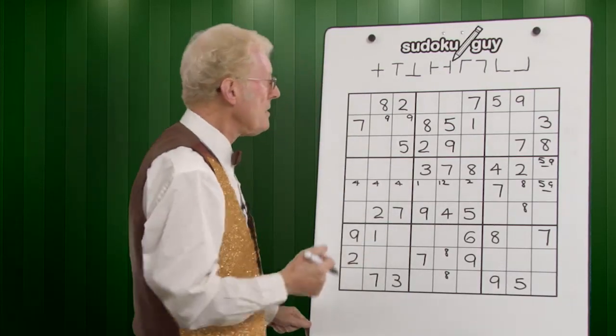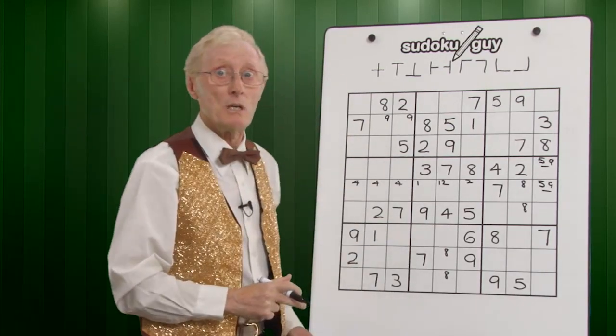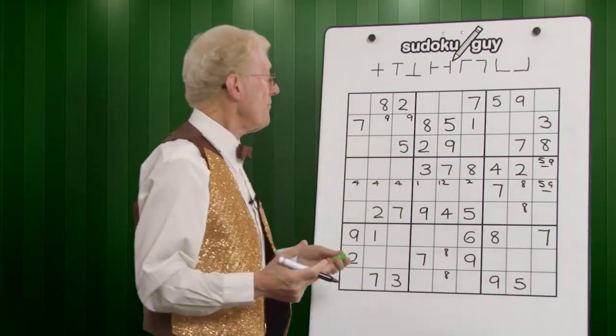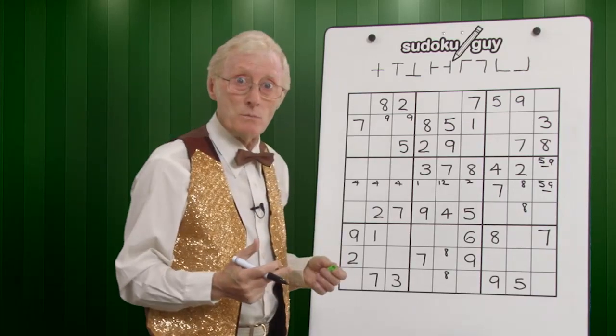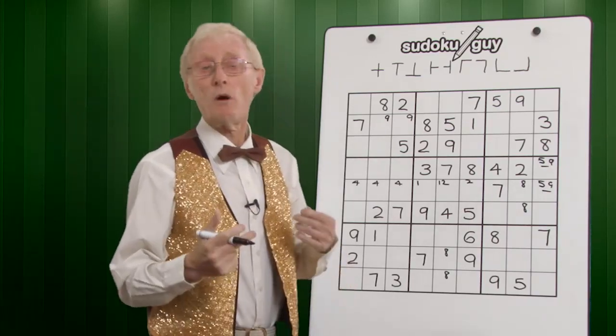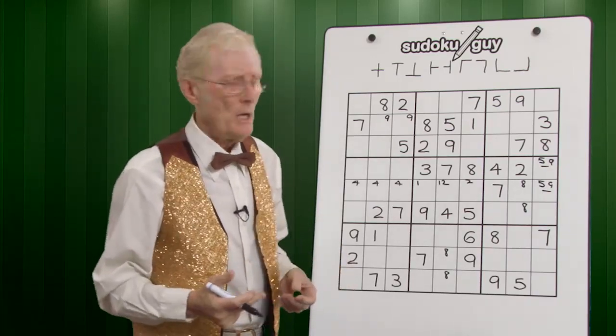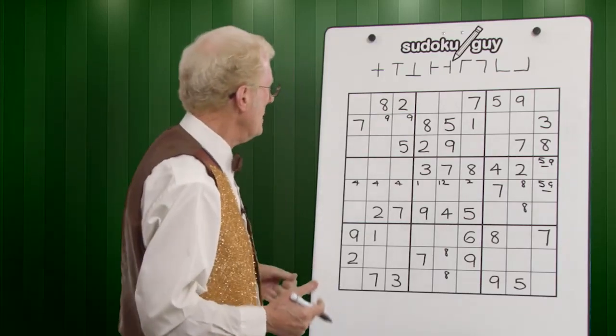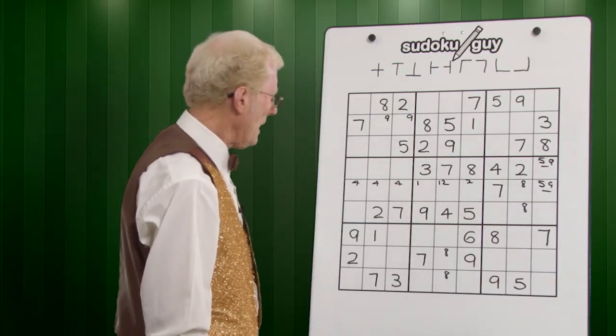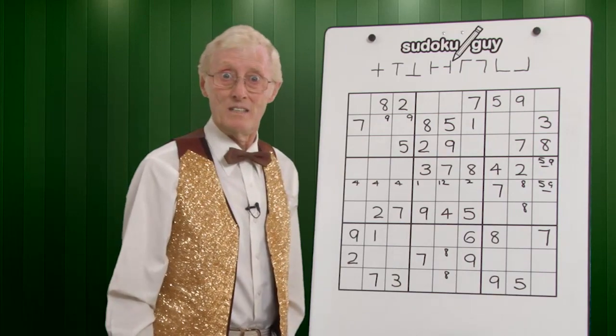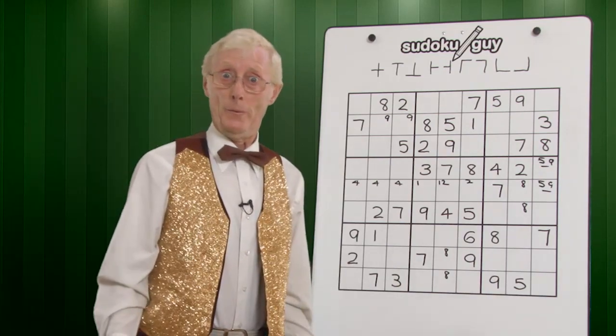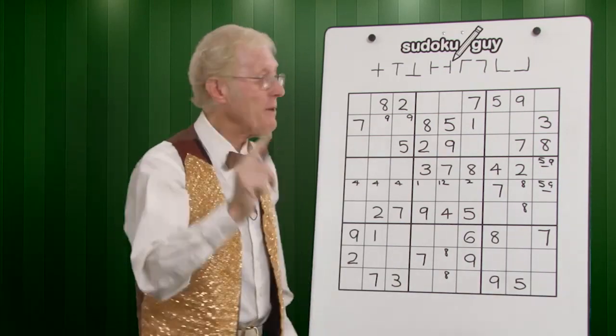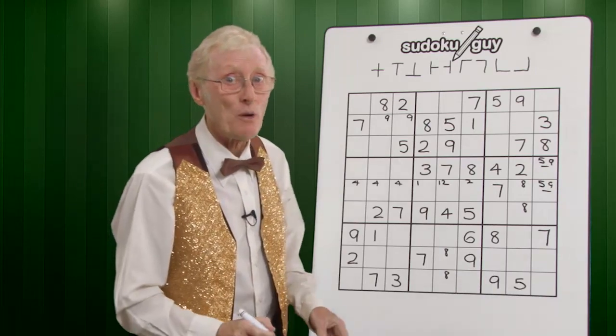Well, now, folks, we've now gone through those basic procedures. We now look for rows, columns, and blocks that have only got one or two cells left. And when I look at that, I tell you, I cannot find any. So now what do we do?